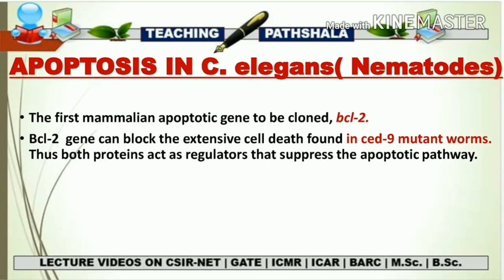Loss-of-function mutation is one of the best ways to know what function a particular gene performs, because in the absence of that gene, or in a condition when that gene is mutated, that function will not be present in that organism. So this is one of the best ways to know the function of a particular gene by doing a mutation in that gene.